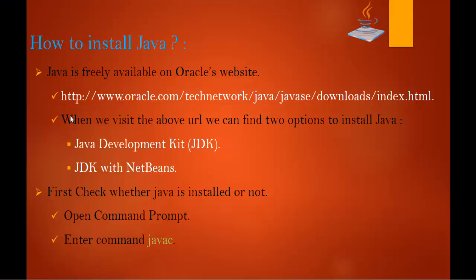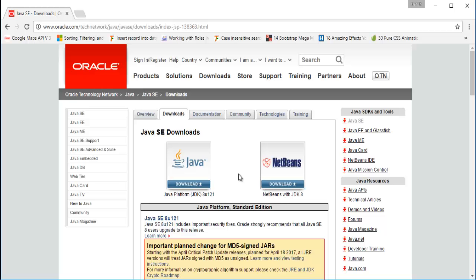Let me jump back to the presentation. When we visit that URL we can find two options to install Java: the Java Development Kit, and JDK with NetBeans. NetBeans is our IDE — Integrated Development Environment. So if you need only Java then you click on the first one, and if you need the IDE as well then you click on the NetBeans button.